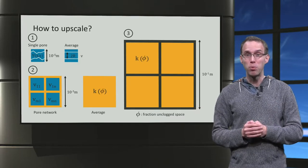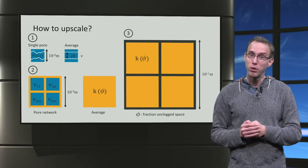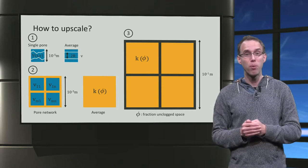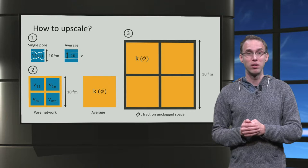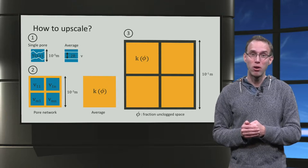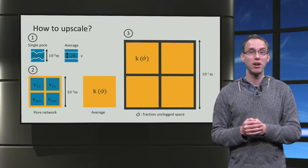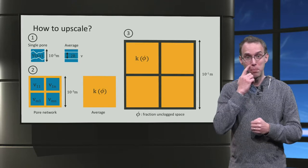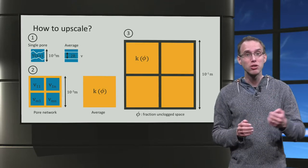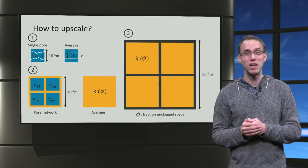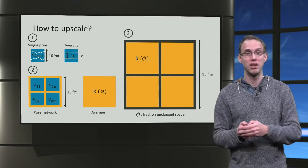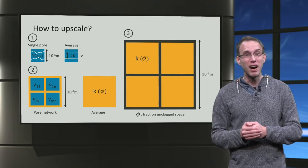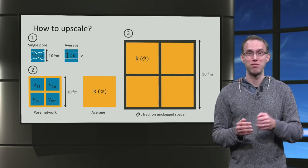We assume homogeneous pores, and we will model biofilm growth through a pore network. We will denote the fraction of the open space that is unclogged by phi. So phi equals zero means that all channels are completely blocked. This also means that the fraction of open space with respect to the total volume is given by phi times the porosity. We will call this phi times porosity the effective porosity.